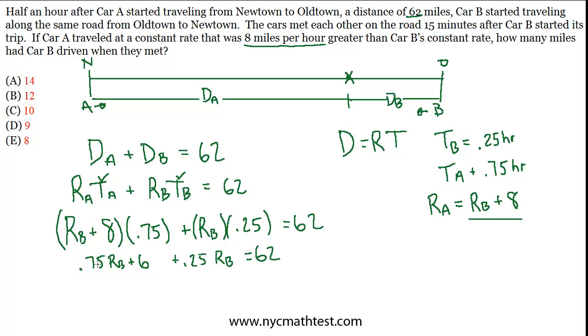If we collect like terms, we have three quarters of RB plus a quarter of RB is just RB. Plus 6 equals 62. So therefore RB must equal 56, 56 miles per hour. But what were we looking for? We were looking for how many miles had car B driven. So we're looking for DB, not RB.